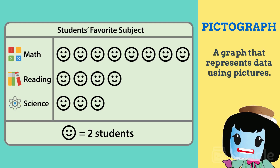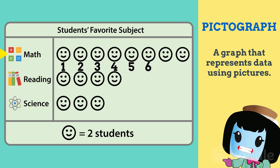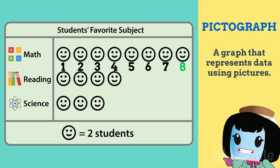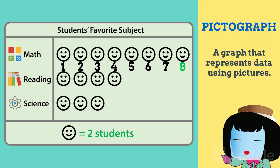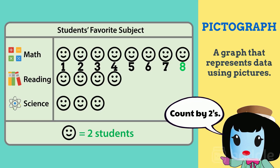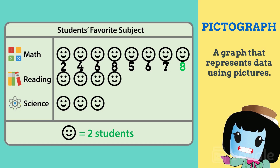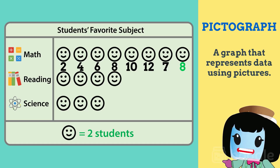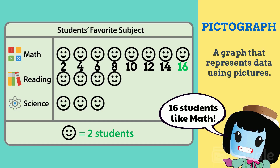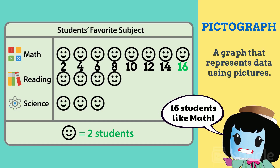So next to math, there are eight smiley faces. Since each smiley face represents two students, we need to count by twos to figure out how many like math: 2, 4, 6, 8, 10, 12, 14, 16. So 16 students like math.